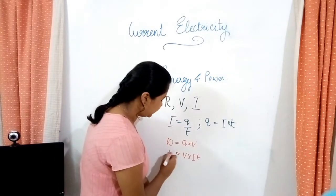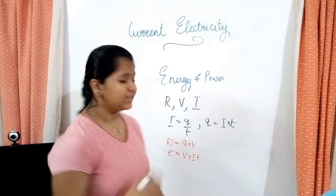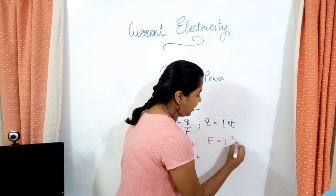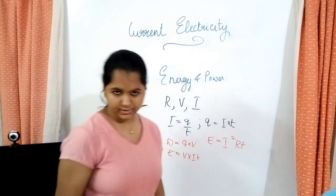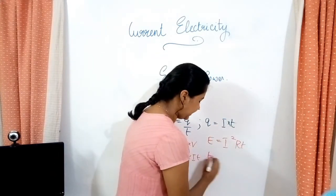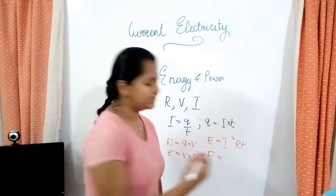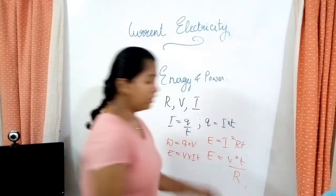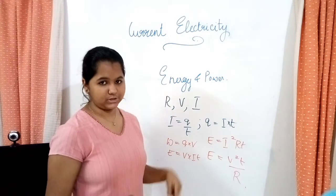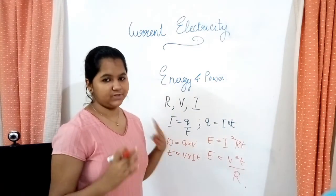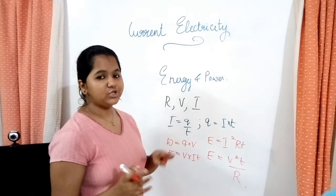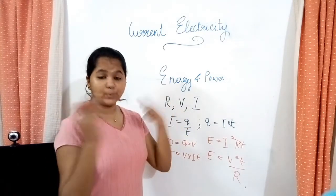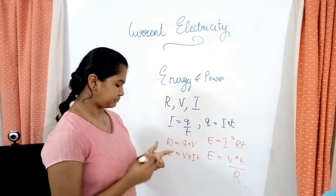So energy is equal to VIT. Similarly, energy is equal to I²RT, and also energy is equal to V²T divided by R. I hope you remember these equations and their derivations. If you need a refresher, make sure you watch the previous part where we discussed this toward the end.